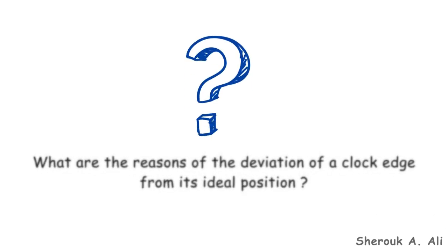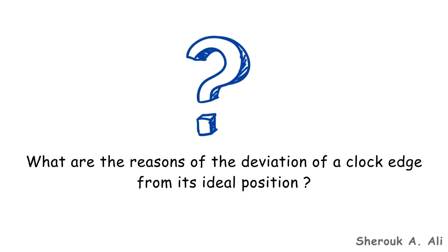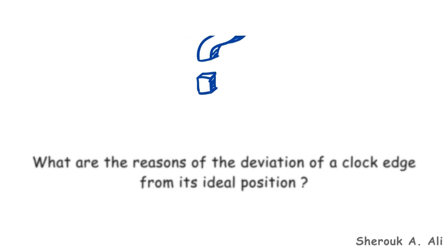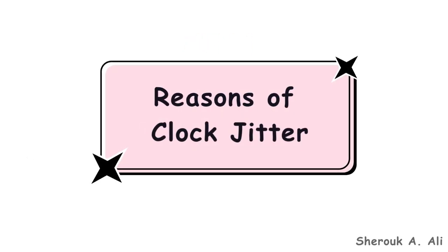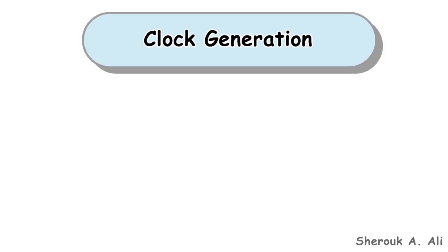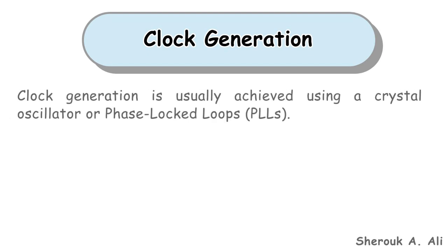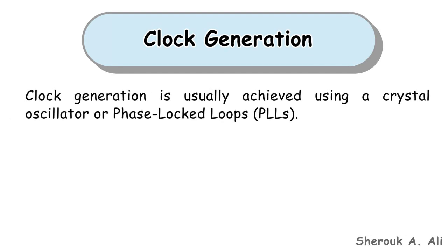The question here is: what are the reasons for the deviation of a clock edge from its ideal position? Let's see the reasons of clock jitter. The first reason is clock generation. As mentioned in a previous video, clock generation is usually achieved using a crystal oscillator or phase-locked loops.